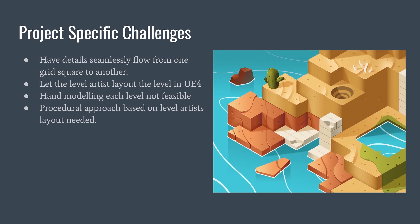Going into a bit of pre-production and project-specific challenges — on the right is some concept art our director Max made featuring our desert world. One really important aspect was that we wanted the world to feel connected and cohesive, so we wanted details to flow from one grid to another. We use dark dots as visual indicators to communicate to the player that they're on a grid and can hop from square to square. The layout is mathematically simple: every grid is separated by 100 Unreal units, and in the Y position it's normally about 50 units or multiples of that.